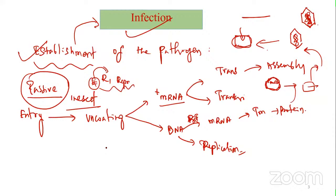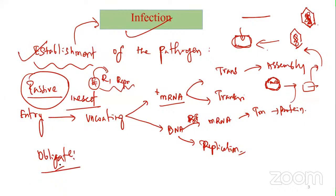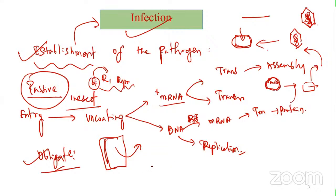After infection and establishment, there will be symptoms. The virus will not try to kill the plant because it is obligate - completely dependent on the host. If the host dies, the pathogen also dies. So the virus tries to maintain the host condition normally, extracting nutrients while the plant's health deteriorates but is not killed - the same as with rust and powdery mildew.